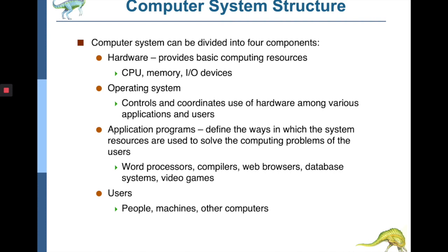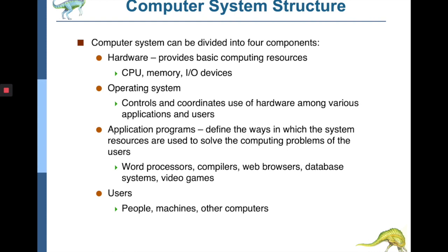A computer system is divided into four components: hardware, operating system, application programs, and users. We are the users, and at the next level come application programs such as word processors, web browsers, databases, video games, and compilers. These application programs run over the operating system. Along with the operating system, there are also system applications, used to assist the main component of the OS — the kernel. There is a diagrammatic view where users interact with hardware through system and application programs, and users are not directly controlling any hardware.